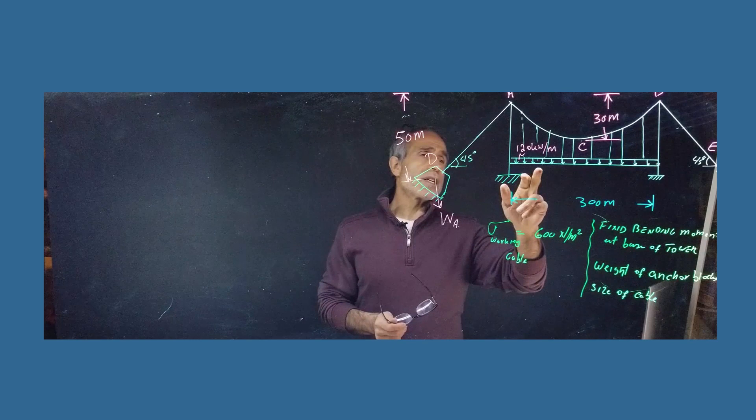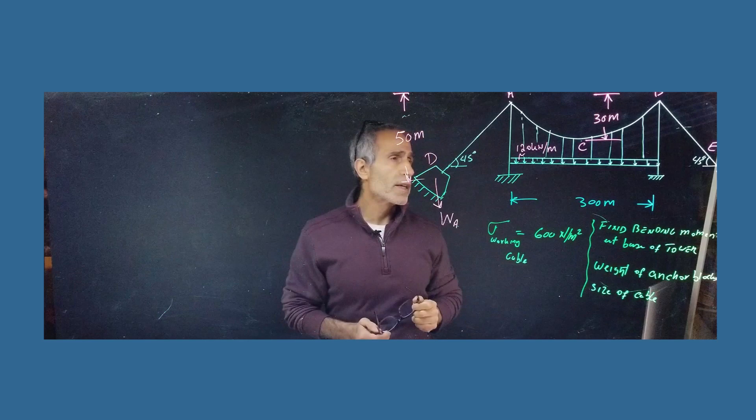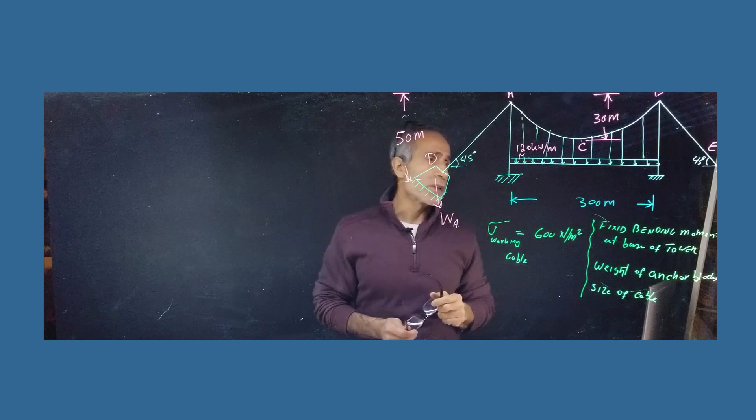So we've got this problem here, it's a suspension, similar to a suspension bridge, has 120 kilonewton per meter of distributed load on a deck, and is supported by the suspender, and we want to find out what's the tension in this main cable here.